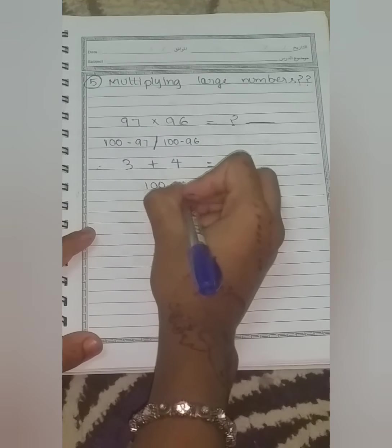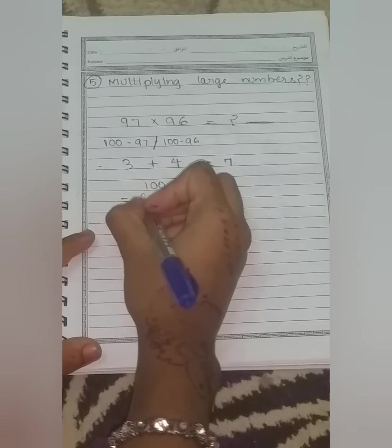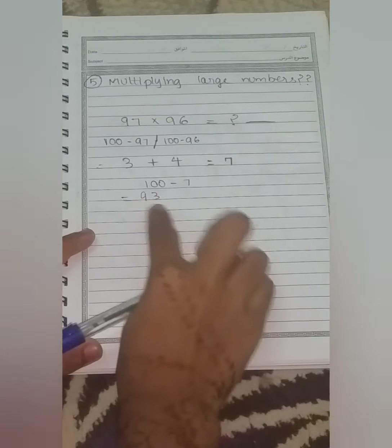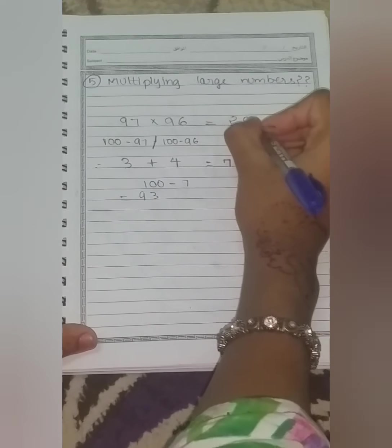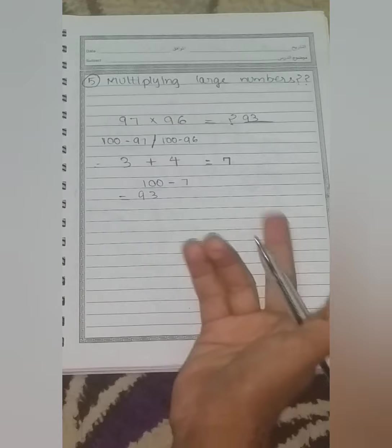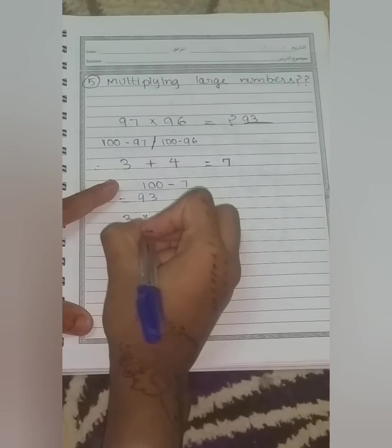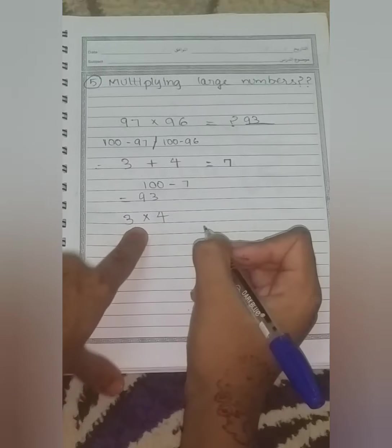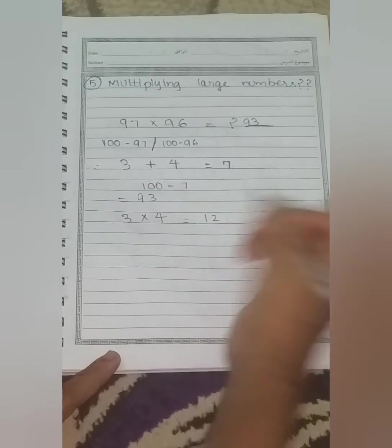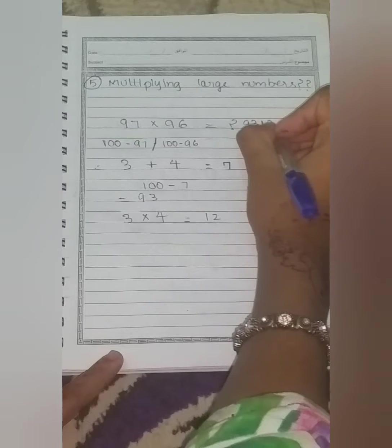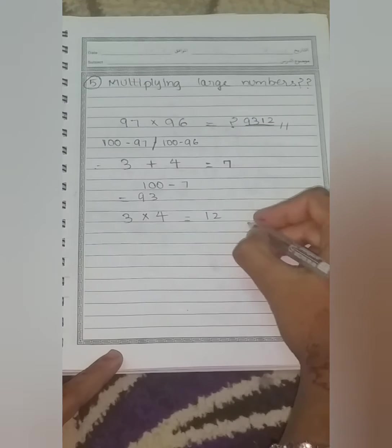Now we should multiply. We should subtract 7 from 100. The answer we get is 93. So our first two digits will be equal to 93. So now we should multiply these both numbers together that first we added. So here we get the answer 12. So this is our answer for this question.